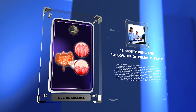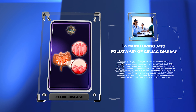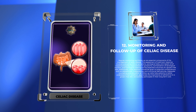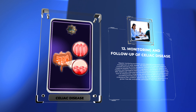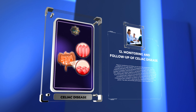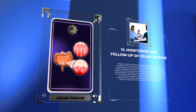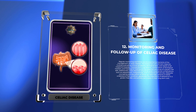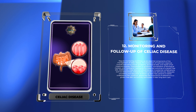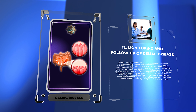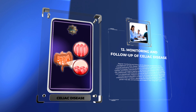Regular monitoring and follow-up are essential components of the management of celiac disease. The assessment of treatment response involves evaluating clinical symptoms, serological tests, and repeat small intestinal biopsies. Improvement in symptoms, normalization of serological markers, and histological healing are the expected outcomes of a gluten-free diet. Additionally, close attention should be given to potential complications such as osteoporosis, malignancies, and nutritional deficiencies. Adequate counseling and education at follow-up visits help patients better understand their condition, appreciate the importance of adherence to a gluten-free diet, and actively participate in their long-term care.